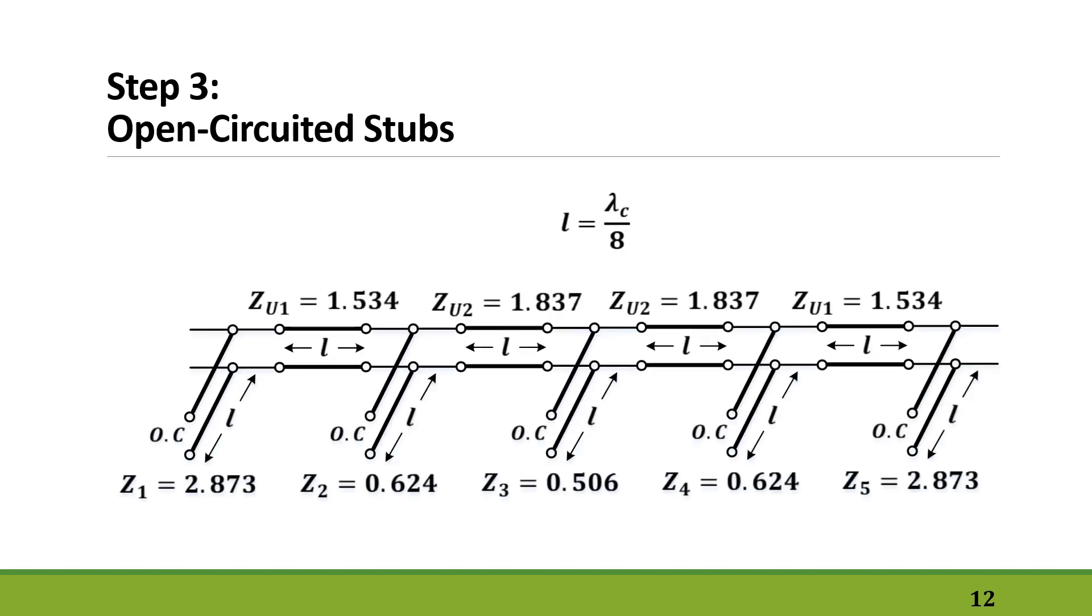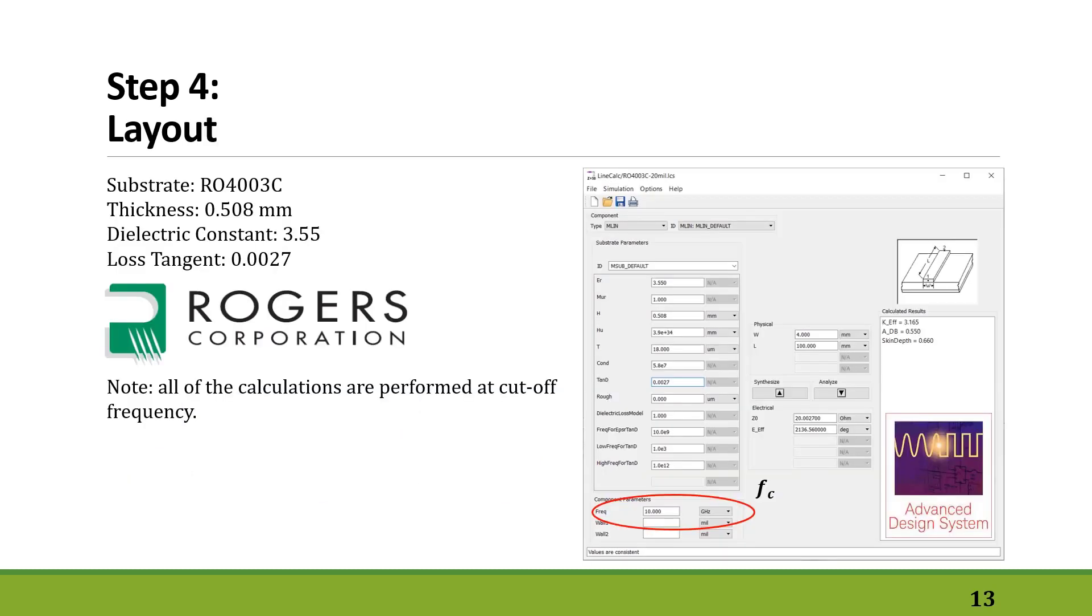Our final step is to develop the layout. To do that, we need to pick a substrate first, and usually we use RO4003C. Please consider that picking a substrate is a challenging and important step in designing a microwave circuit, so don't rush into it.